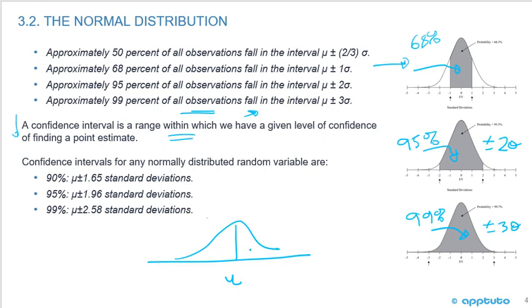...if we take some point estimate, we're going to have a 90% confidence that the point estimate is plus or minus 1.65 standard deviations from the mean. We'll have a 95% confidence that the random variable is plus or minus 1.96 standard deviations from the mean.